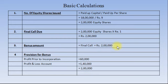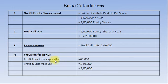Students, always remember: for partly paid up bonus shares, bonus amount is equal to final call due on shares. Here in our example, it is Rs. 2 lakh. For the provision for bonus, out of Profit Prior to Incorporation, amount utilized is Rs. 60,000, and out of Profit and Loss Account credit balance, amount utilized is Rs. 1,40,000 — total Rs. 2 lakh, which equals the bonus amount.